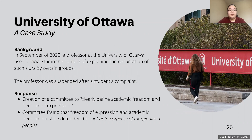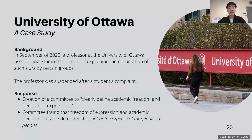A case study of how a university attempted to define the line between academic freedom and freedom of expression is shown here, with the events in September of 2020 at the University of Ottawa. A professor at the University of Ottawa used a racial slur in the context of explaining the reclamation of such slurs by certain groups. Following a student's complaint, the professor was suspended.